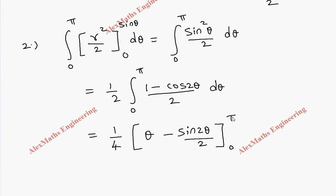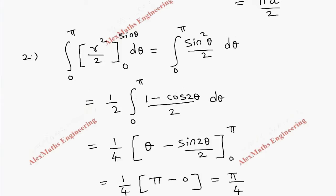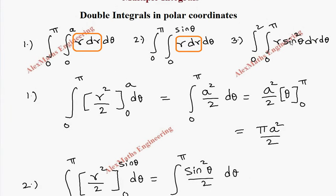We apply the limit 0 to pi. When we apply the upper limit we get pi minus sin 2π, which is 0. When we apply the lower limit both terms are 0. So we are left with π / 4.